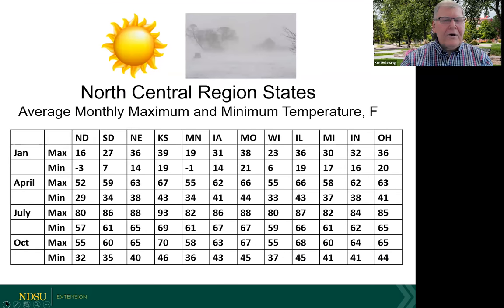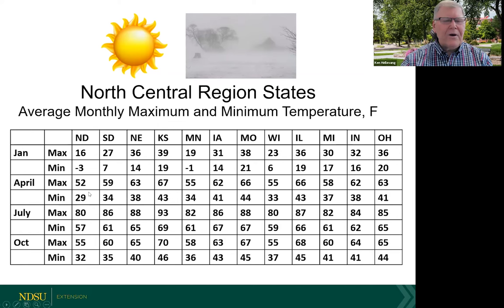I do presentations across the country, so I put this visual together to show how numbers vary by state. South Dakota will be slightly warmer than North Dakota. In April, North Dakota maximum temperatures are 52°F versus South Dakota's 59°F, with minimums of 29°F versus 34°F — so not a big difference, just a couple degrees warmer for South Dakota.